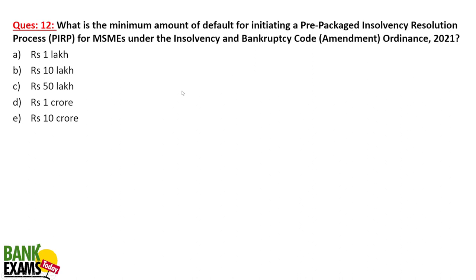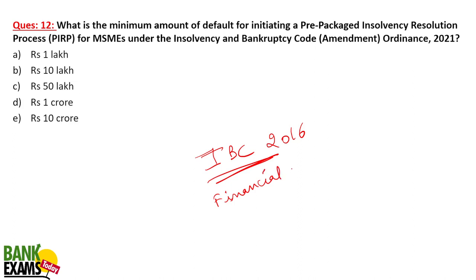What is the minimum amount of default for initiating the pre-package insolvency resolution process? I would highly recommend you go through the IBC code 2016, available in the financial awareness section of the IBPS RRB Scale 2 and Scale 3 course. The pre-package insolvency resolution process was updated in 2021. If the minimum default amount is 10,000 rupees and the maximum is 1 crore rupees, then it is eligible under the pre-package insolvency resolution process.